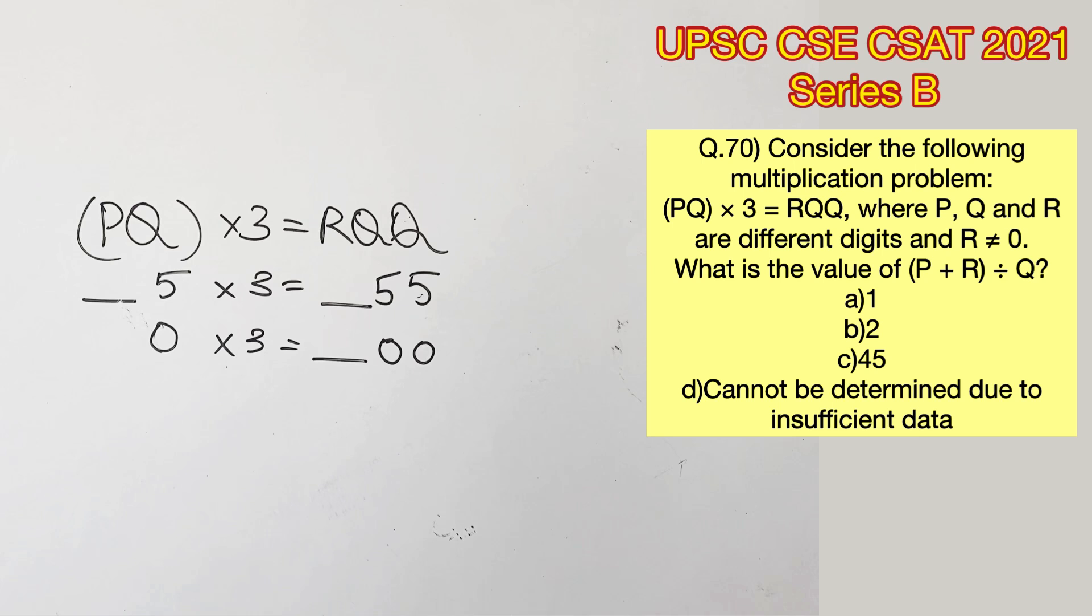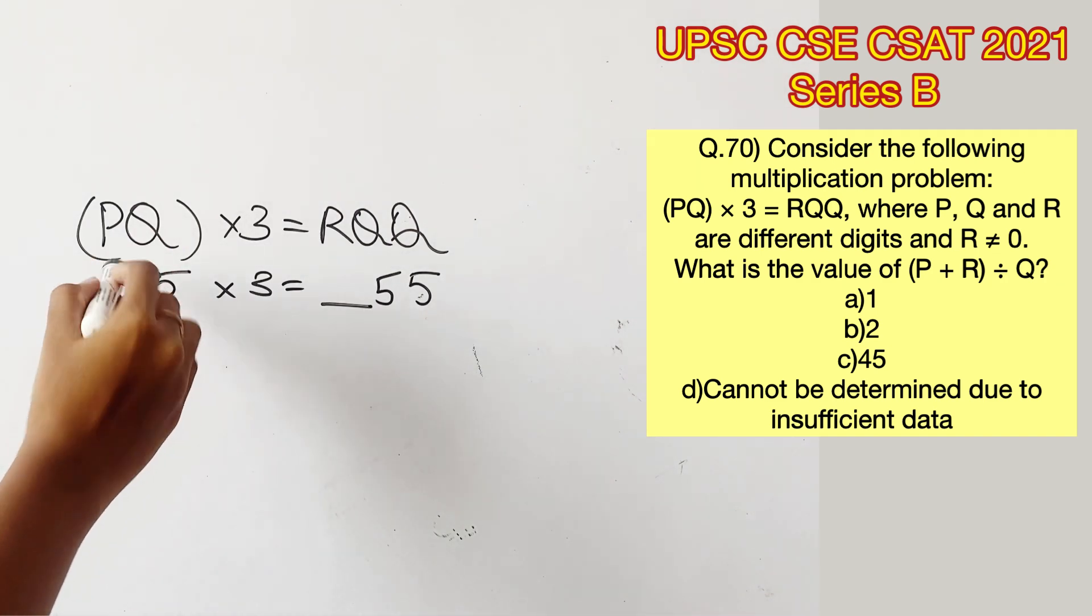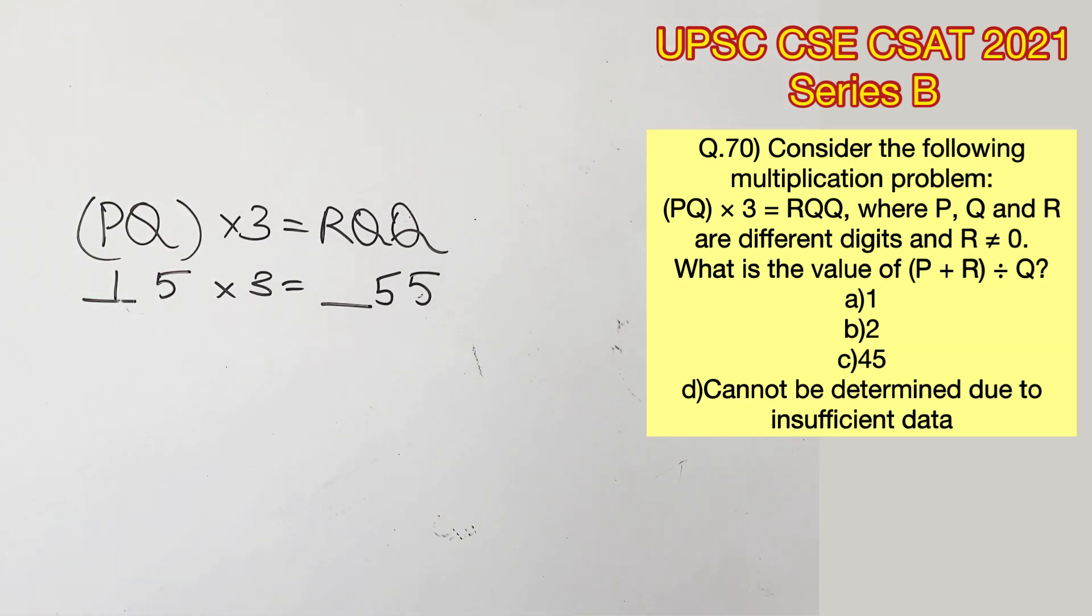Therefore we can eliminate this equation on the whole. Now let's try the digits with this equation. Substituting 1, 15 into 3 will give us 45. 25 into 3 will give us 75. 35 into 3 will give us 105.